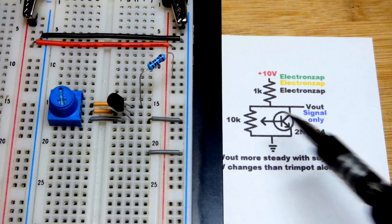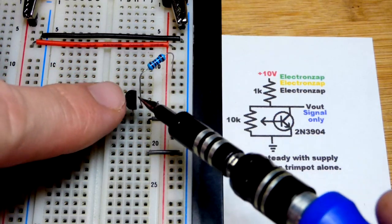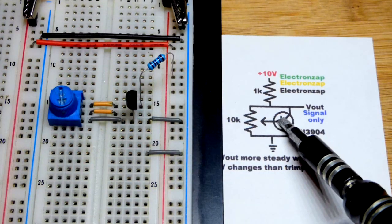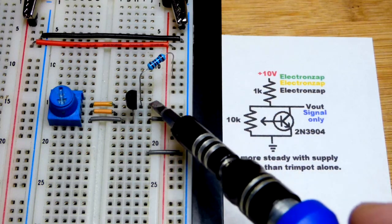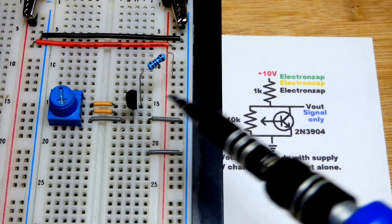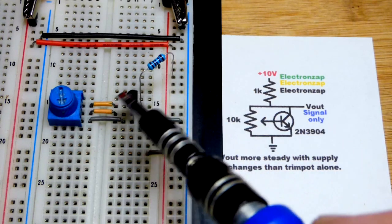So we've got a 2N3904, and the flat side is to the right right there. That means the bottom pin is the emitter, arrow of the schematic there, and then we've got the base right there, the middle pin, and the collector on top. It lines up pretty nicely with the schematic when I have the flat side to the right.